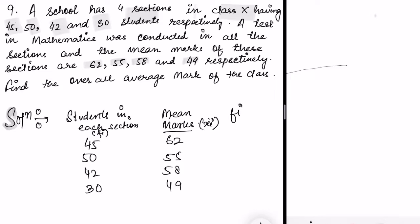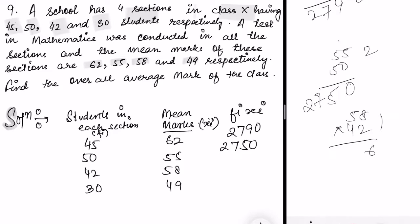Let's find fi×xi by multiplying these numbers. 45 into 62: 5 to the 10, 4 to the 8, 9, 6, 5 the 30, 6, 4 the 24 plus 3 is 27, giving 2790. Next, 50 into 55: 5 the 25, 5 the 25, gives 2750. Then 58 into 42: 8 to the 16, 5 to the 10.